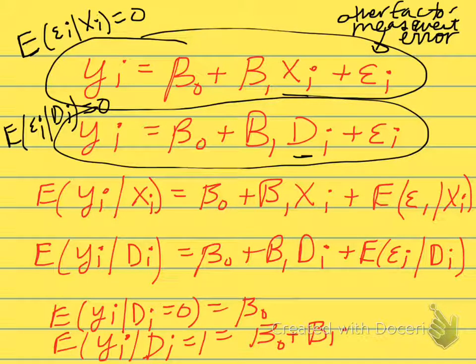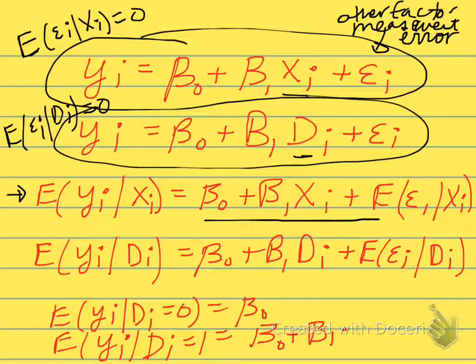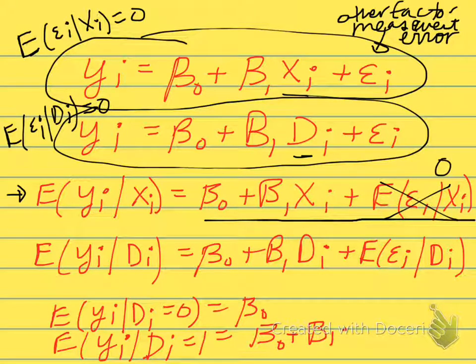Now, we can take the expected value of our regression, as we do here, conditional on the xi's. And what do we get? β0 plus β1 times xi plus the expected value of the error term, and that's, of course, equal to 0. So we see that the expected value of the outcome is β0 plus β1 times xi.